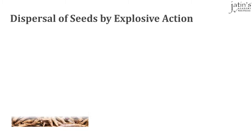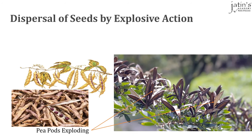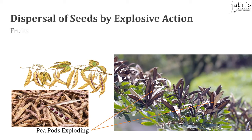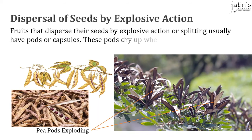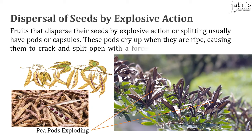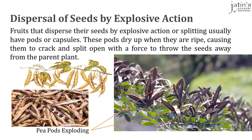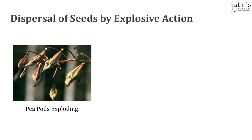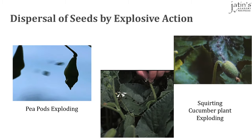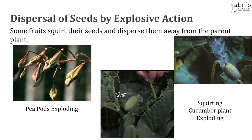Dispersal of seeds by explosive action: here we can see a typical pea pod exploding and throwing seeds far away from the parent plant. Fruits that disperse their seeds by explosive action usually have pods or capsules. These pods dry up when ripe, causing them to crack and split open with force to throw the seeds away. Some fruits like cucumber squirt their seeds and disperse them away from the parent plant.